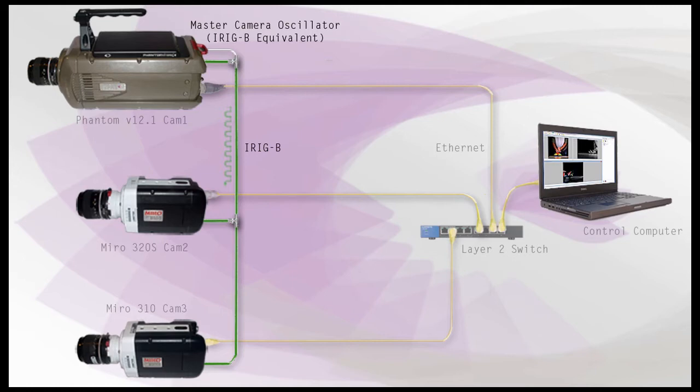Depending on the camera model, these connectors can be found on the rear of the camera, labeled as time code out and time code in, or iRig-Out and iRig-In. If they are not on the rear of the camera, these signals are accessed through a breakout box or a capture cable.